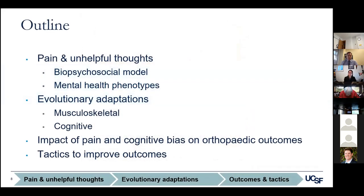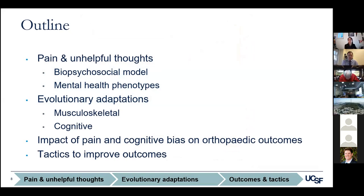For this talk, I'm going to first give an overview of pain and unhelpful thoughts, then review the biopsychosocial model of pain and discuss different mental health phenotypes. I'll cover evolutionary adaptations — both musculoskeletal and cognitive — that are relevant to orthopedics today, tie this back to the modern day to review the impact of pain and cognitive bias on orthopedic outcomes, and finish with some proposed tactics to address unhelpful thinking and improve patient outcomes.